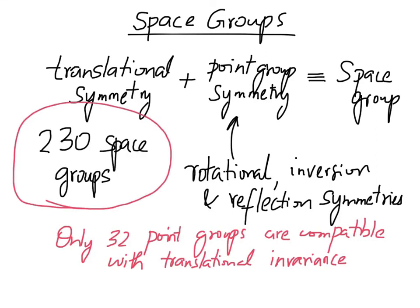The combination of point groups and translational symmetry leads to a total of 230 space groups. Each of the space groups is essentially a collection of symmetry operations — translational as well as rotational, inversion, and reflection — that will leave that crystal unchanged. Any crystal, which is a lattice plus basis, can be placed in one of these 230 space groups. It is really quite incredible that all the infinite possible crystals can actually be put in one of these 230 classes.